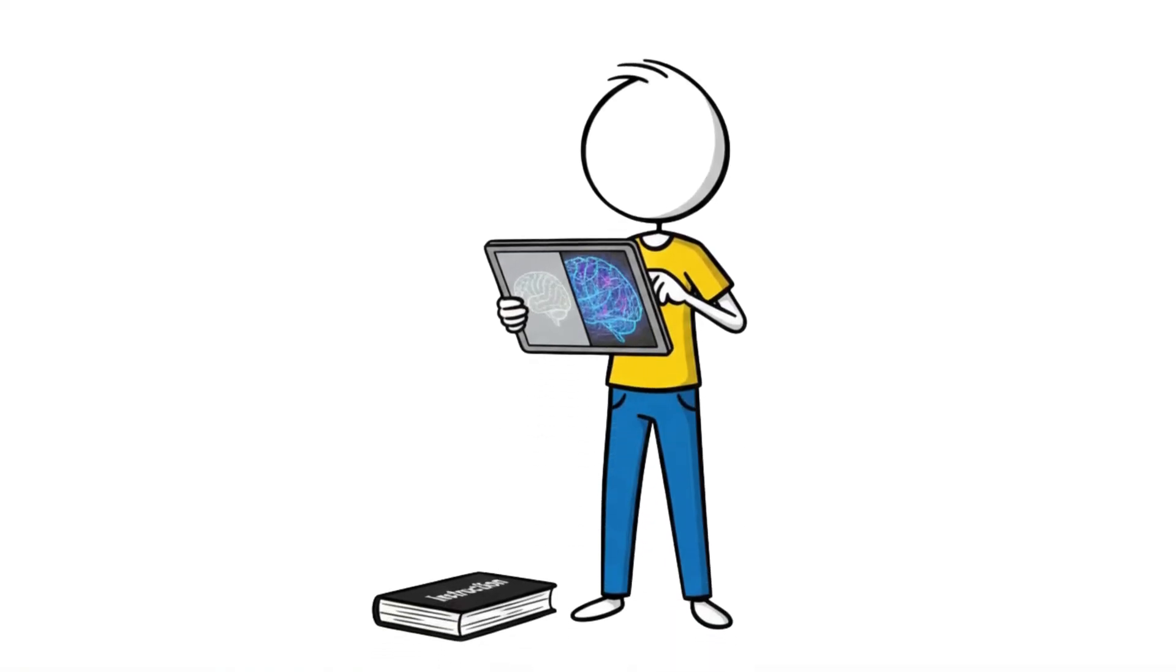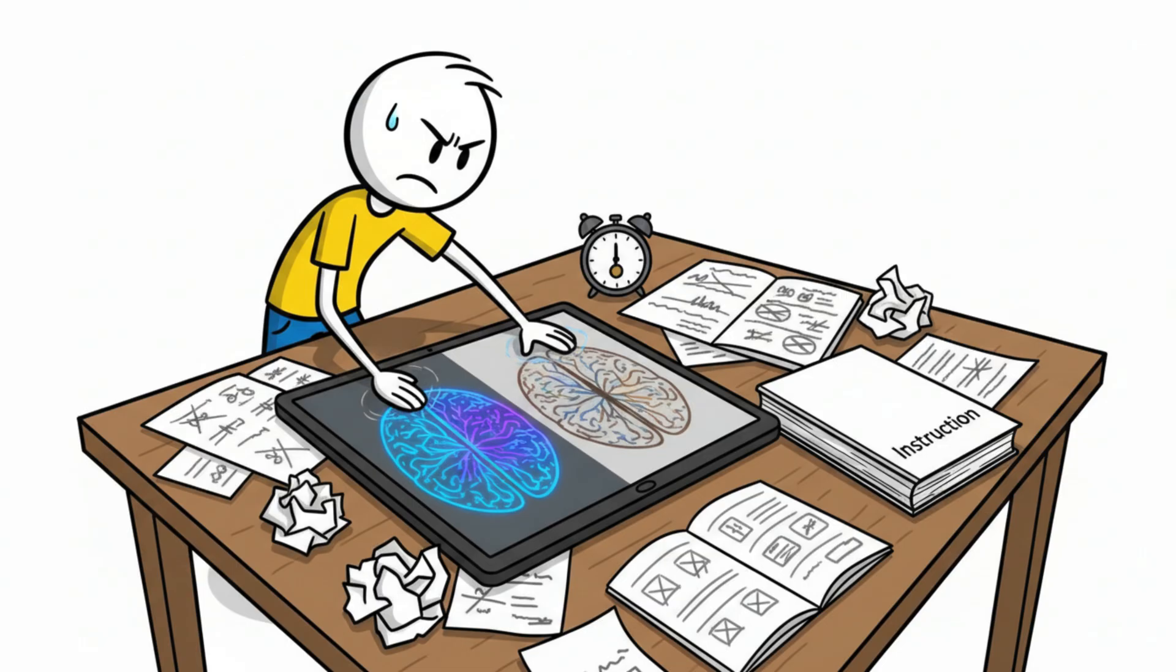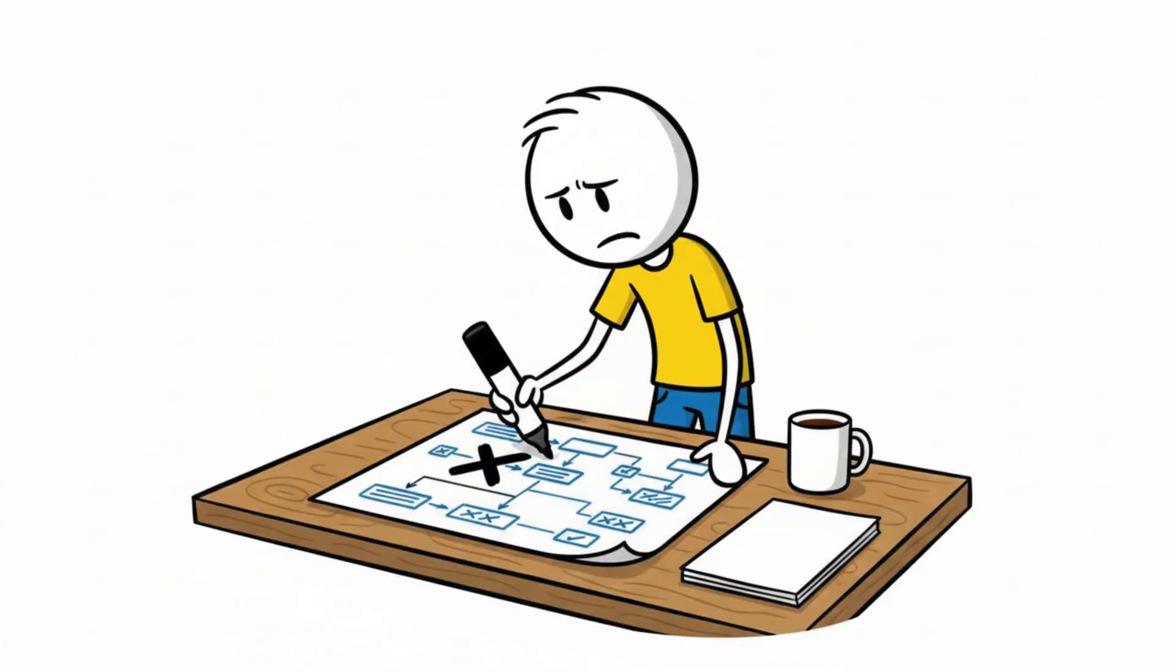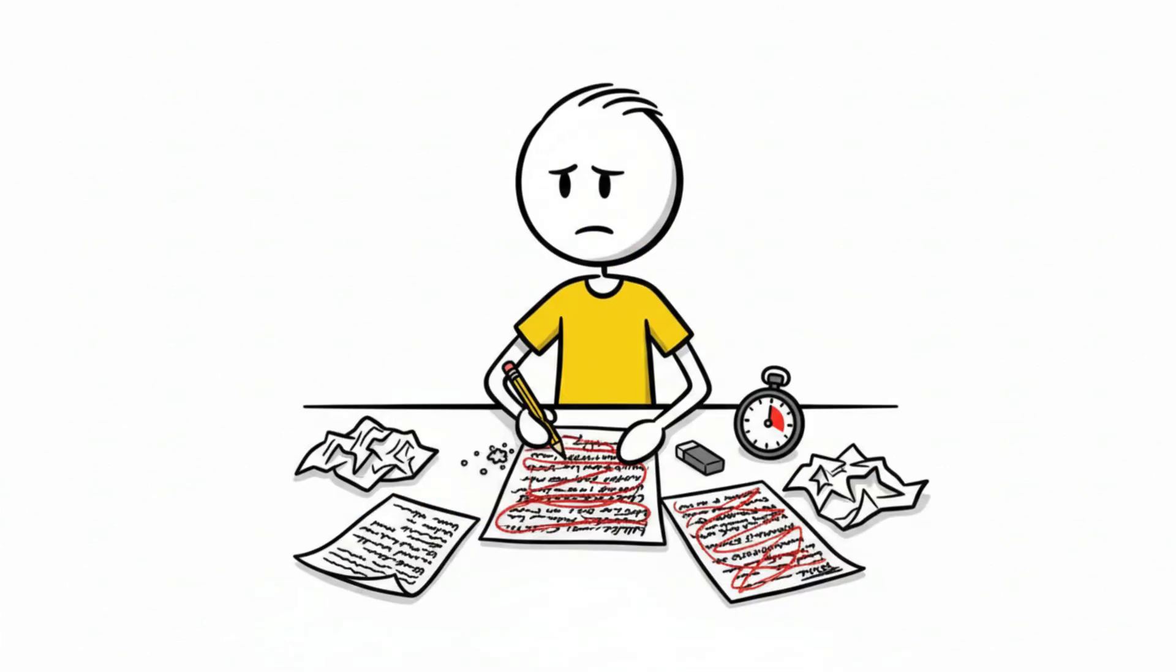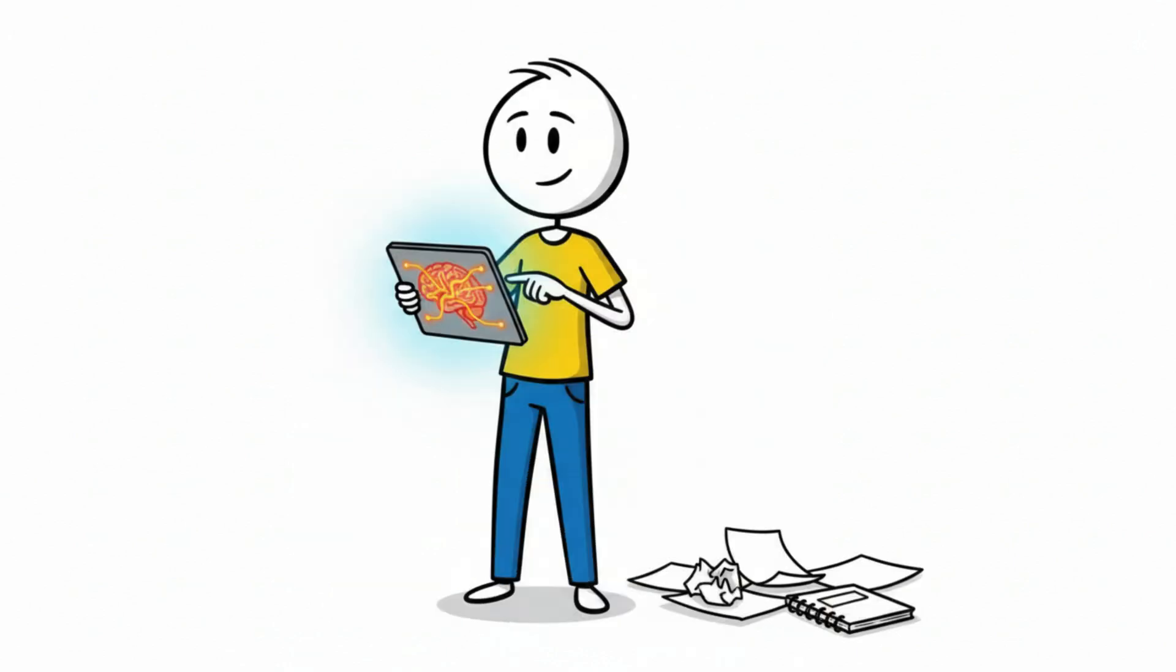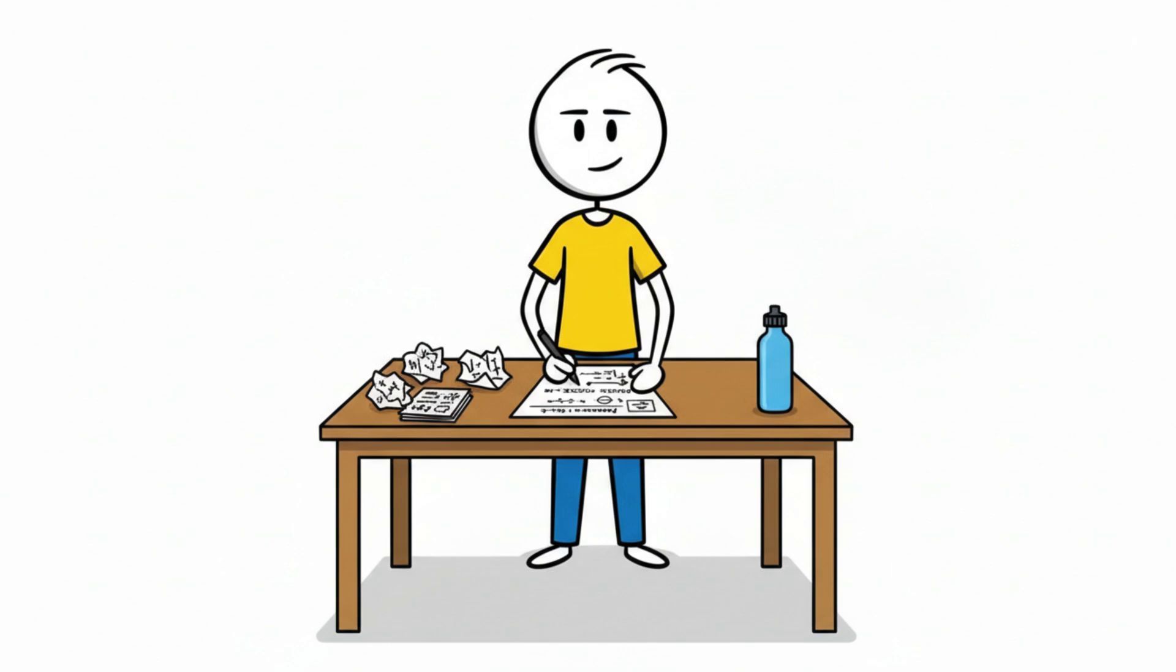Brain imaging research supports the logic. Struggle activates deeper networks than passive instruction does. When you wrestle with something, the brain has to search for patterns, test frameworks, and correct itself. That process is expensive, so it leaves a trace. It becomes learning you can actually use.